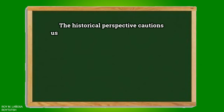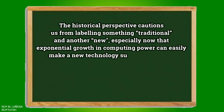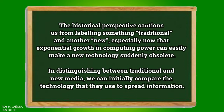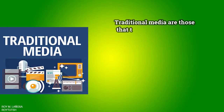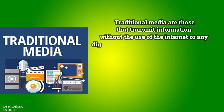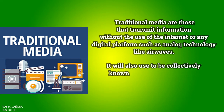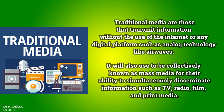The historical perspective cautions us from labeling something traditional and another new, especially now that exponential growth in computing power can easily make a new technology suddenly obsolete. In distinguishing between traditional and new media, we can initially compare the technology that they use to spread information. Traditional media are those that transmit information without the use of the internet or any digital platform, such as analog technology like airwaves. It used to be collectively known as mass media for its ability to simultaneously disseminate information, such as TV, radio, film, and print media.